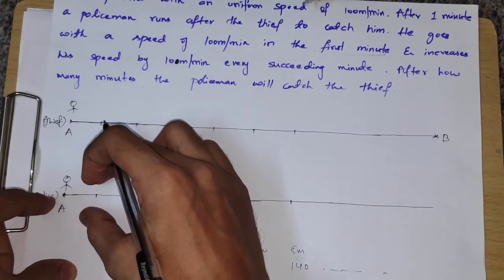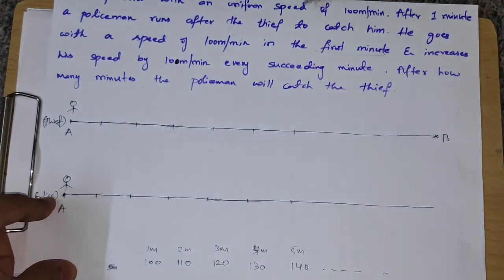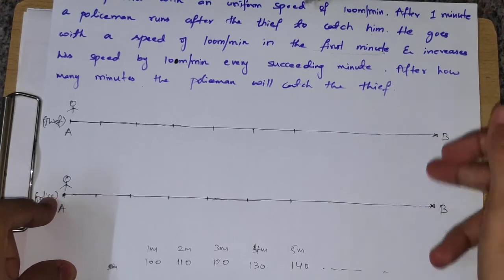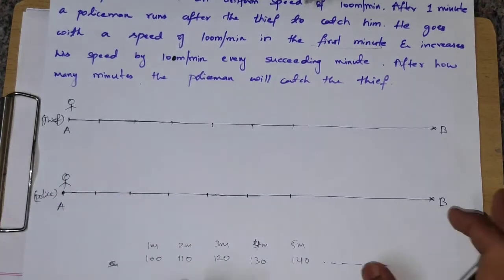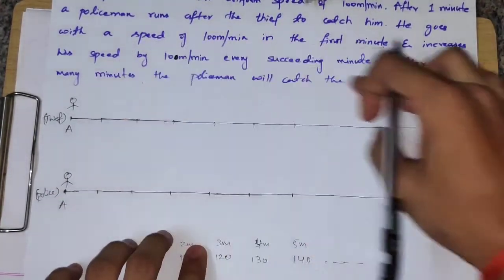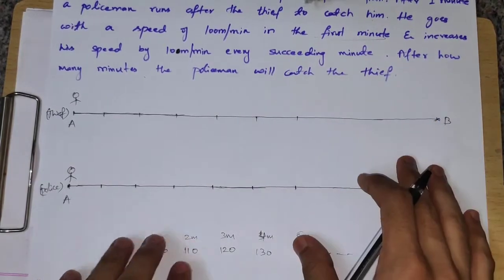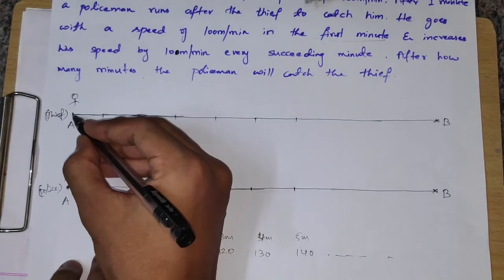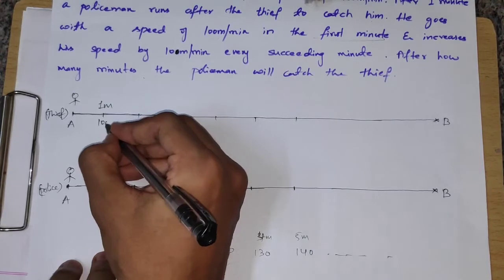The thief covers 100 meters in the first minute, then 100 meters the next, increasing by 10 each time. So the meeting point will be at some point. The main logic of this complete problem: we will get an AP. The thief covers a uniform distance every minute — 100 meters in the first minute.